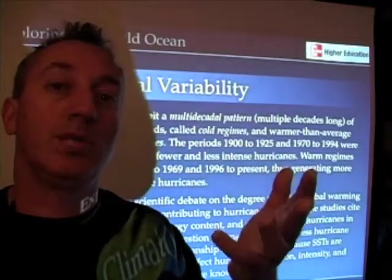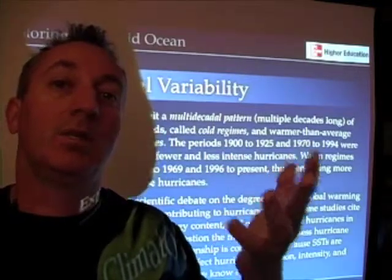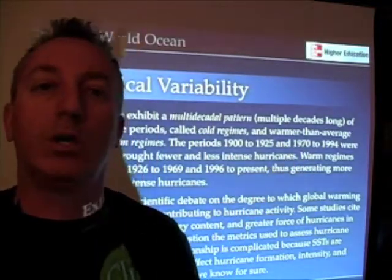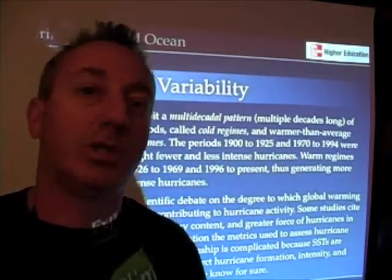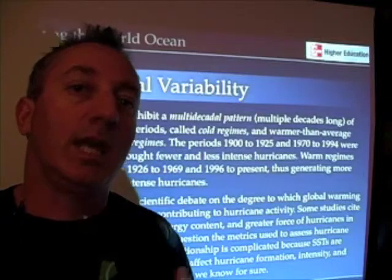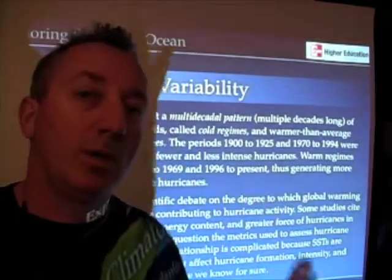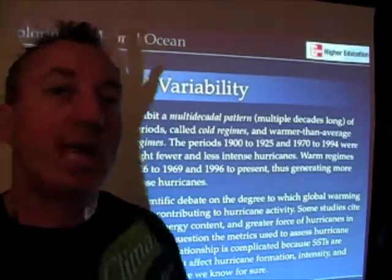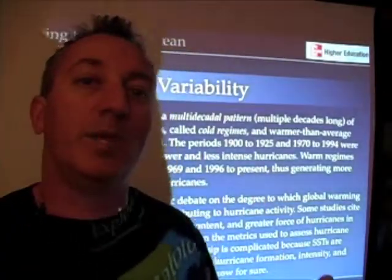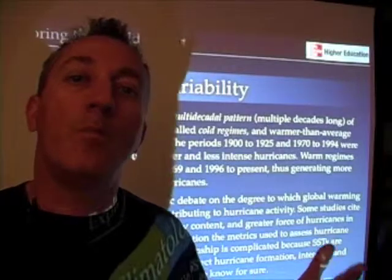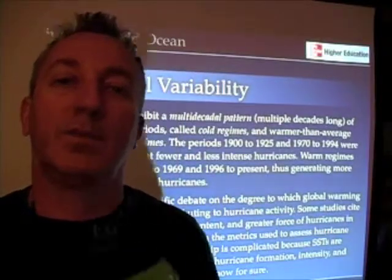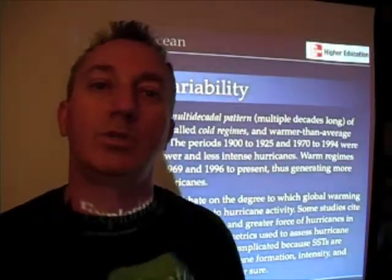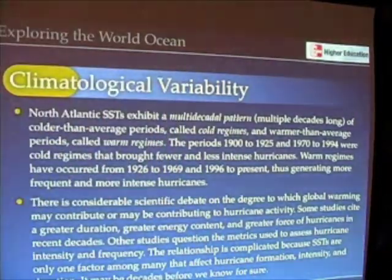Cold regimes mean fewer hurricanes, warm regimes mean more. We're currently in a warm regime in the North Atlantic Ocean, and so meteorologists, climatologists, and hurricane researchers have been predicting more hurricanes for the next couple of decades as a result of that.